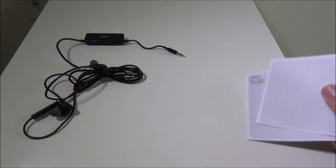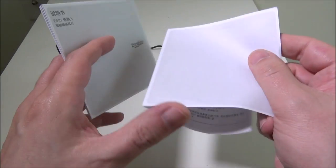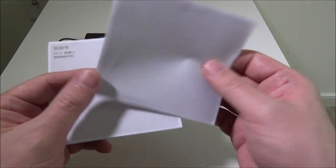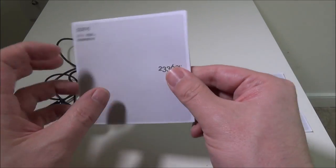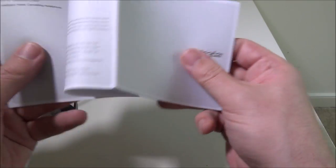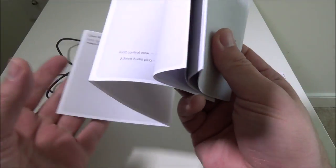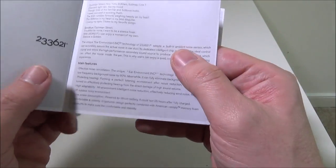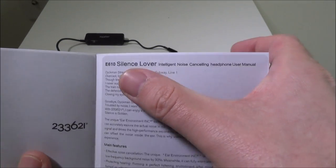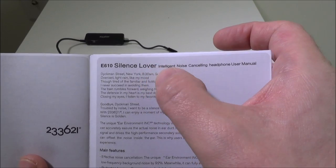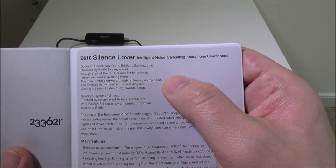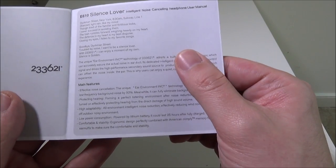I'm going to put these back in here and show you the documentation really quickly. This is kind of just a warranty card, it is all in Chinese so I'm not going to go through that too much. You've got a card that basically is just a fold-out, it's in English on one side and Chinese on the other. The e610 silence lover intelligence noise canceling headphone user manual.